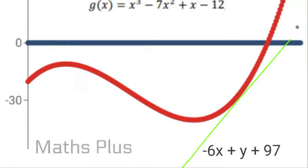You can see there on the graph the slope is positive, and it's down pretty far under the x-axis, going to the right.